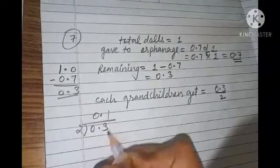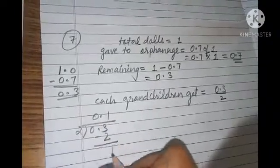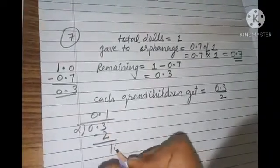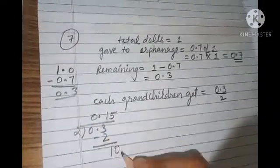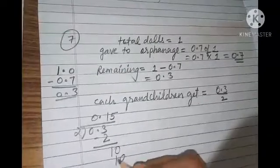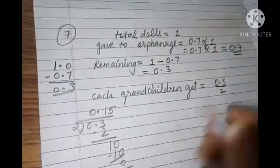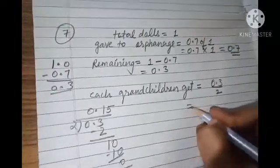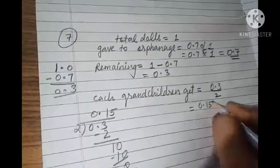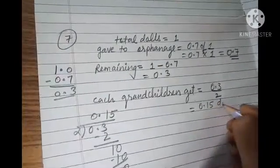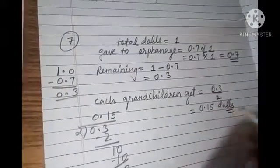Let's divide the number: 0.3 ko two se divide karte hain. 0 point as it is aayega. 1 two is 2, minus karo — 1 remaining. Decimal already hai, 0 lagaya: 10 divide by 2 — 5 twos are 10, minus kiya, you will get 0. That means how much doll you will give to each child — 0.15 dolls.